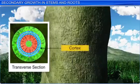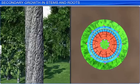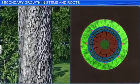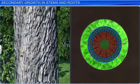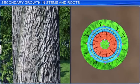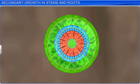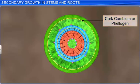The cortex is another region where secondary growth takes place. Due to the vascular cambium's activity, the stem increases in girth, resulting in rupturing of the cortical and epidermal layers. These layers need to be replaced with new protective cell layers. In due course, another meristematic tissue called cork cambium, or phelogen, develops, usually in the cortex region.